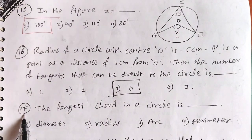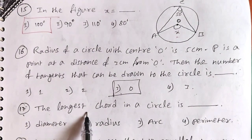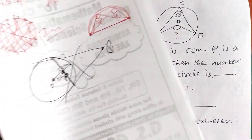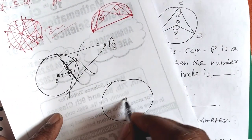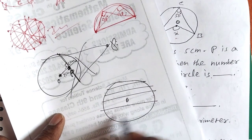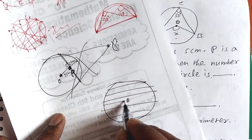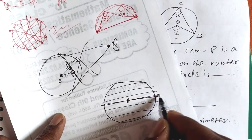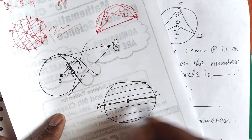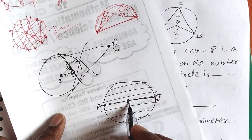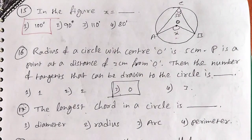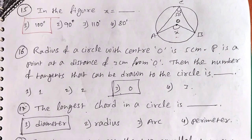Question 17: The longest chord of a circle is what? If you draw any chord, the chord drawn through the center is the longest. The diameter passes through the center and is the longest chord. So the first option, diameter, is the answer.